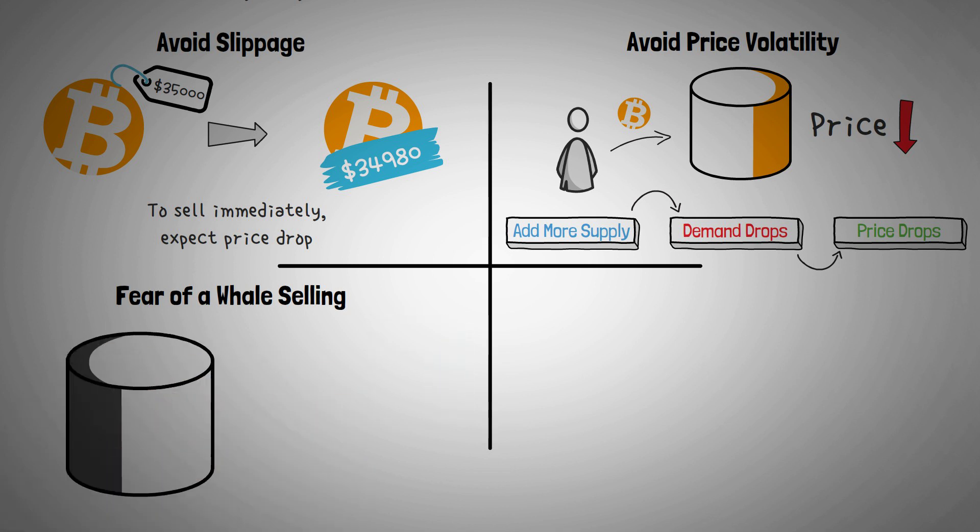In short, dark pools are a great way to hide trades. Some dark pools actually allow you to trade your hardware wallet as opposed to making a crypto transfer.